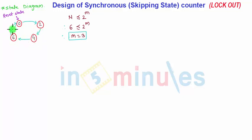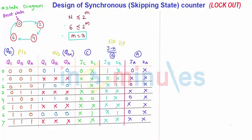These 4 states we are not using. So what we put there while solving the skipping state counter or the synchronous skipping state counter? What we did for the state number 1, 3, 5, and 7, the next state to these we considered as don't care.